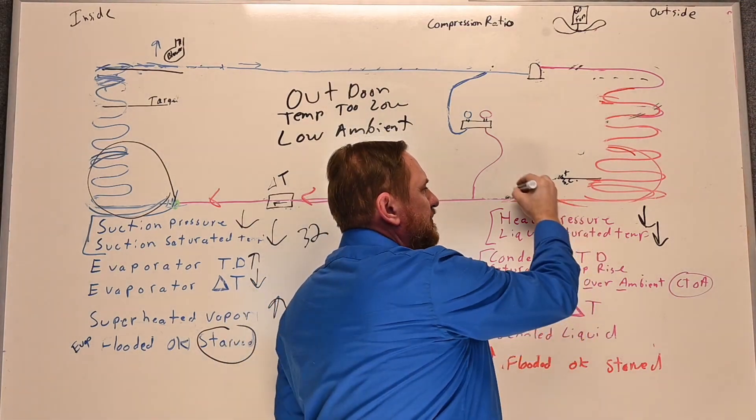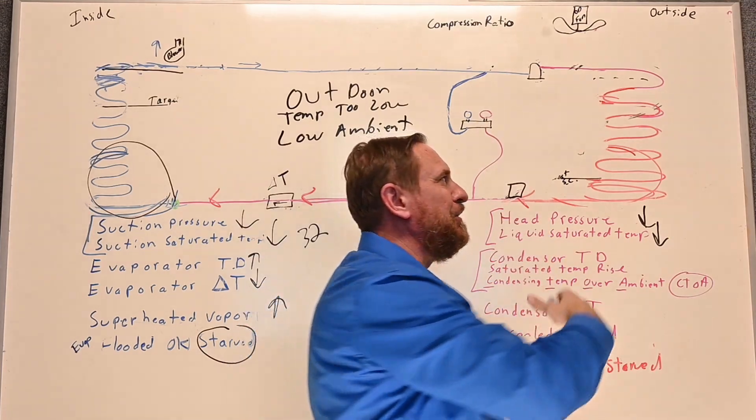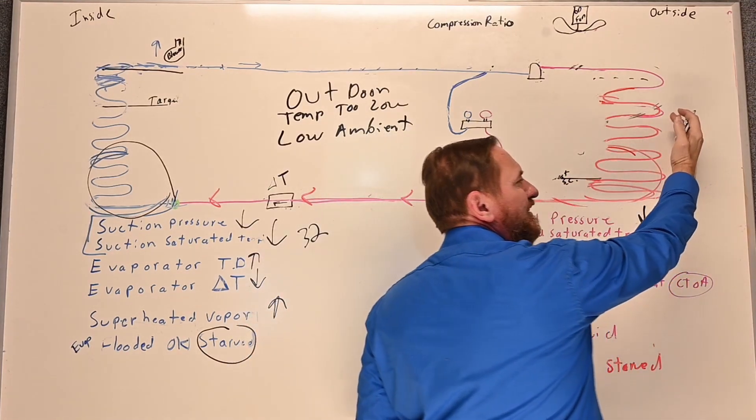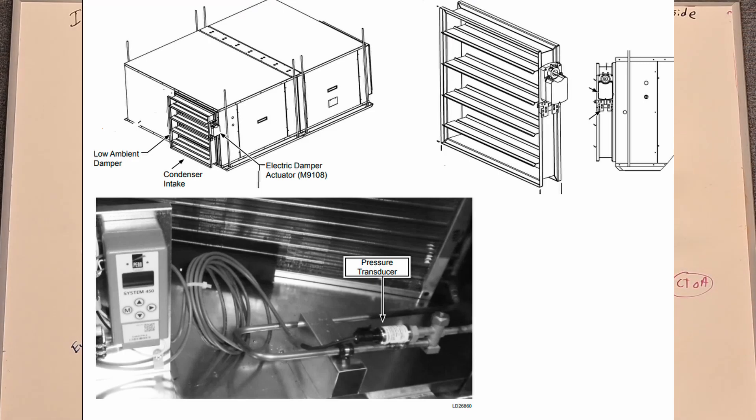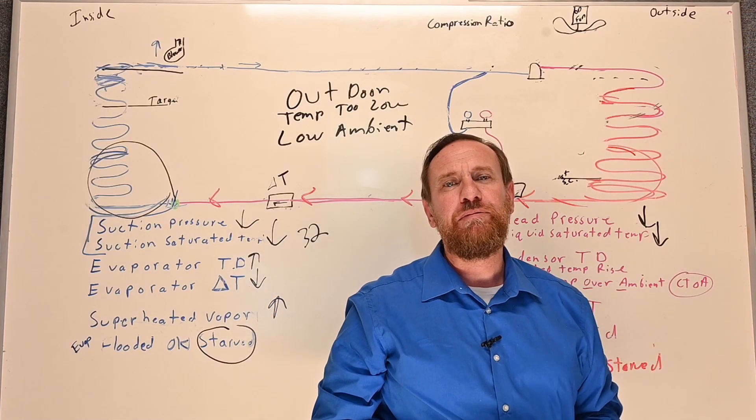Another method we use is we can use a pressure switch right here in this line, and we can use that pressure switch to control dampers. We control the amount of air going to the condensing unit by controlling dampers, opening and closing, controlling how much air goes. That's really impractical for residential systems, but it is a way of controlling head pressure.